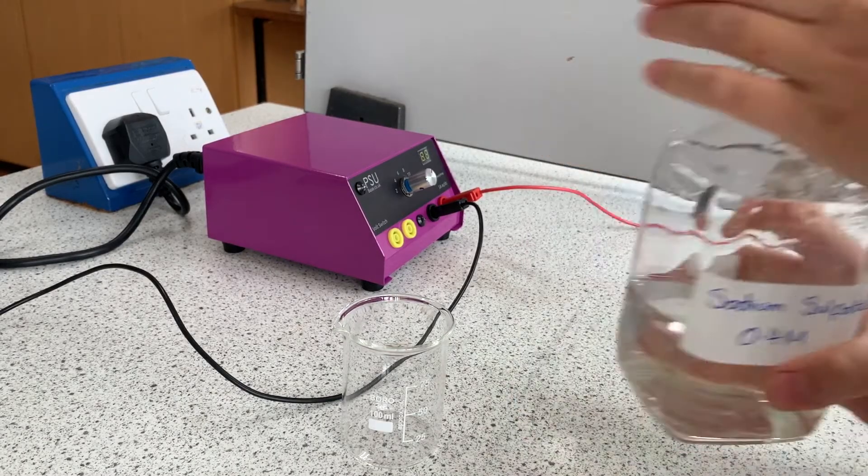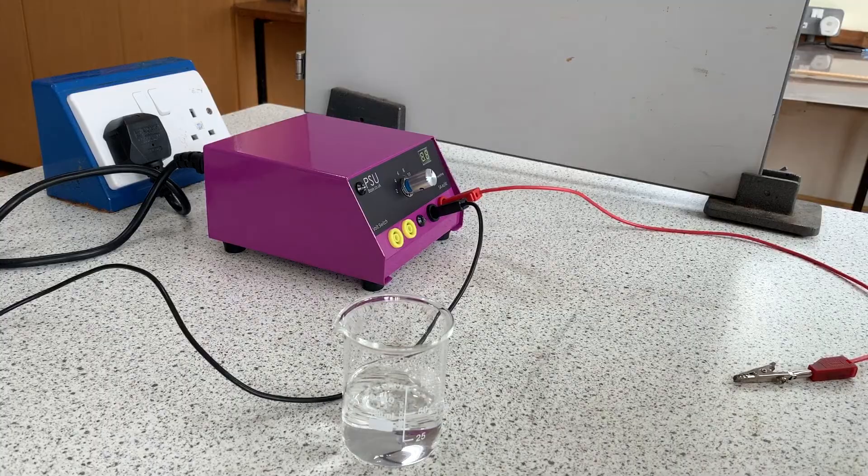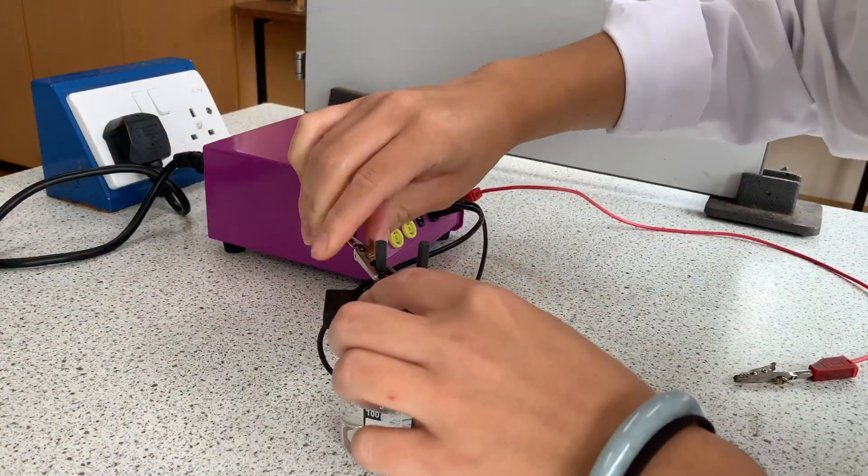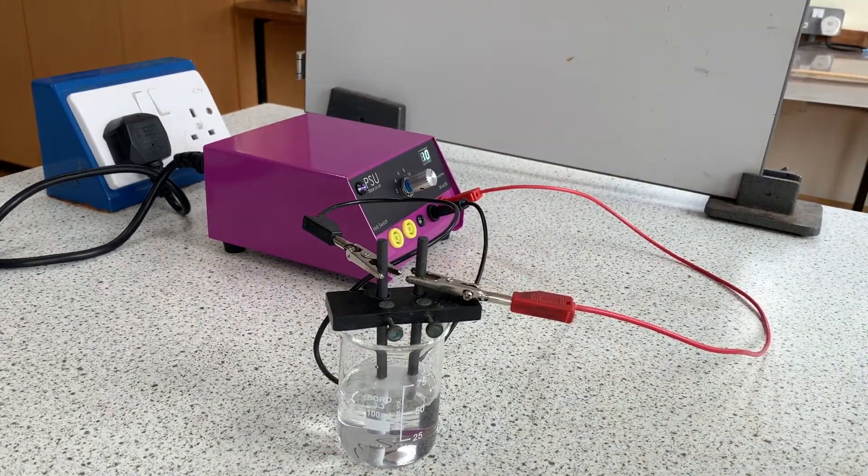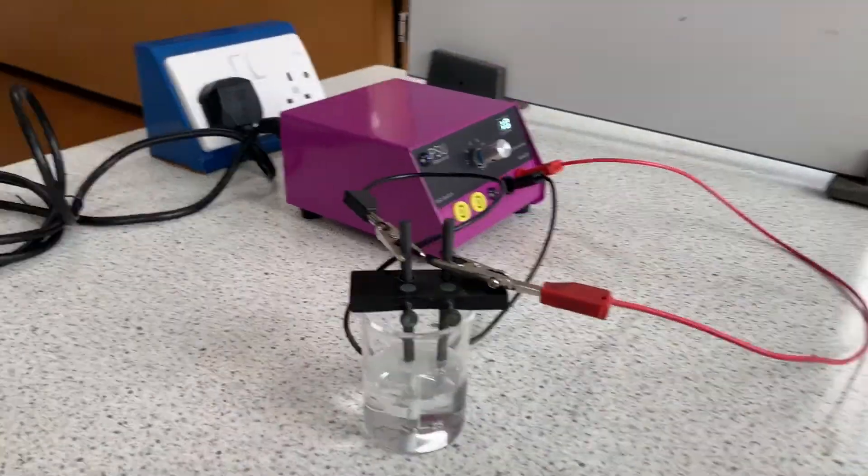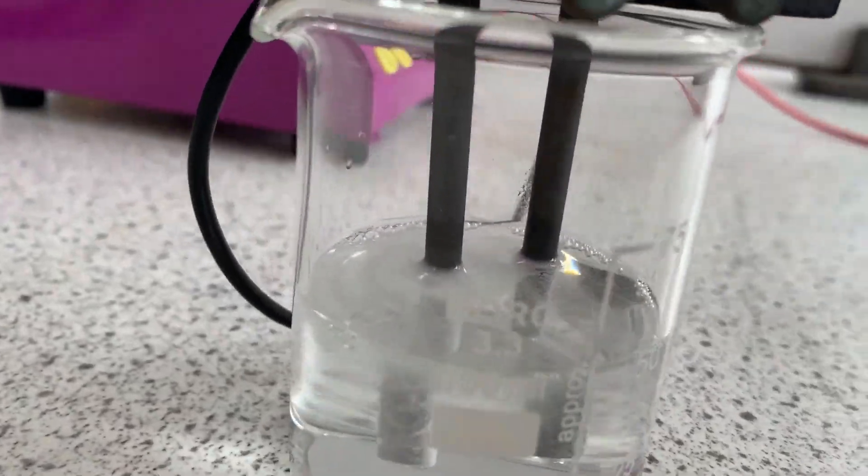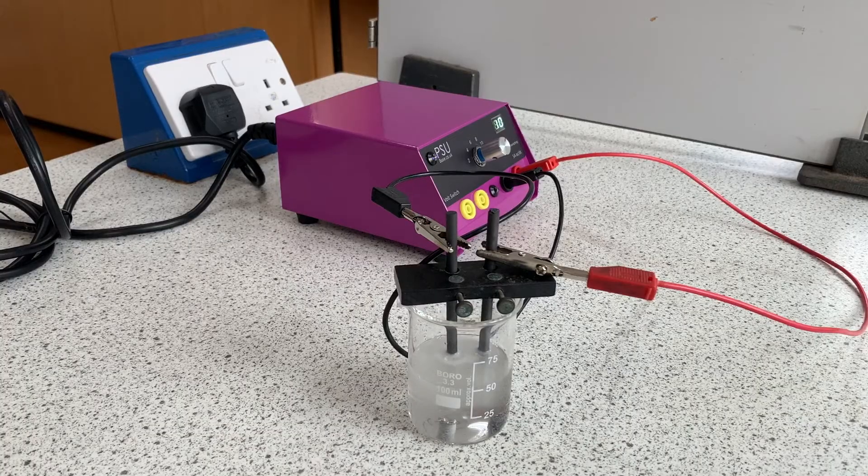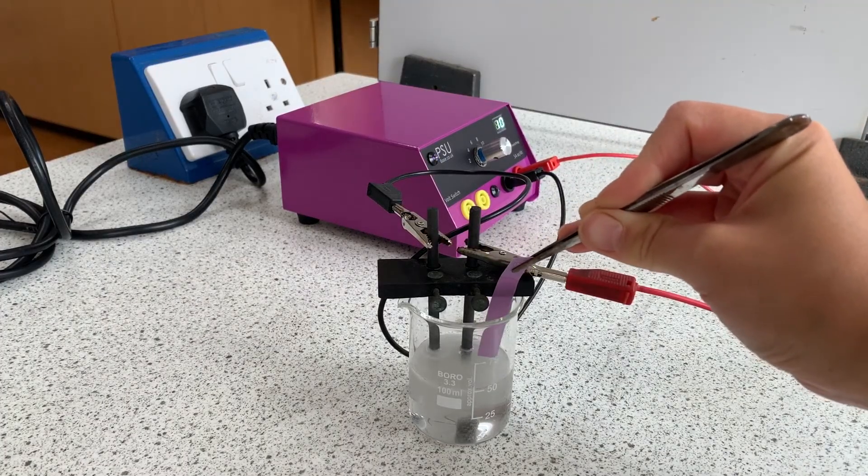The final compound is sodium sulphate. Again fill up the beaker halfway, put in the electrodes and connect it to a power source. As before, there is fizzing at both electrodes, which means there is a gas being given off at both electrodes. We do not see sodium formed at the negative electrode because it's more reactive than hydrogen and it stays in the solution.